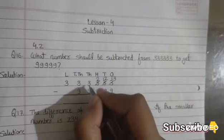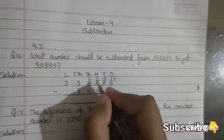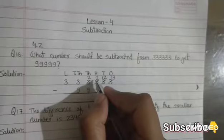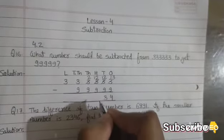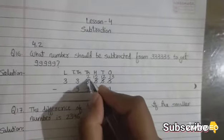This 2 is smaller than 9, so we will take borrow. 3 becomes 2, and this 2 becomes 12. 12 minus 9 is 3.